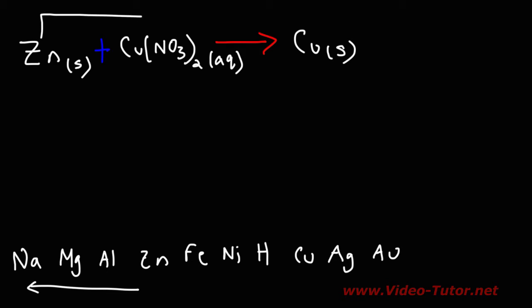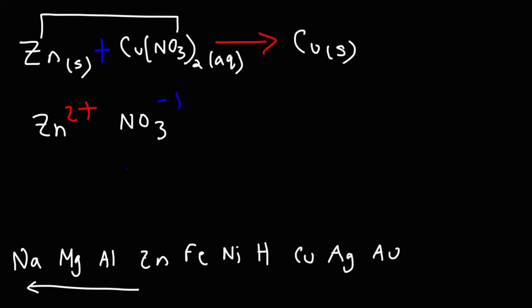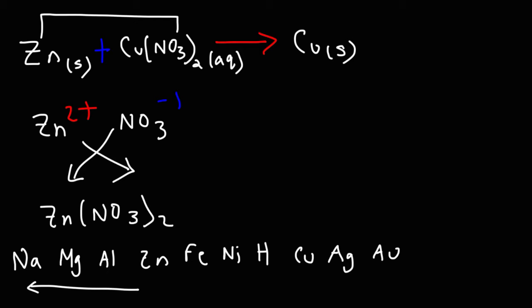The zinc is going to pair up with nitrate. The zinc is going to lose two electrons, turning into the Zn 2+ ion. Nitrate is a polyatomic ion with a minus 1 charge, so in order for these to neutralize each other, we need one zinc ion and two nitrate ions. The chemical formula of zinc nitrate is going to be Zn(NO₃)₂. Nitrates are always soluble in water, so this is going to be in the aqueous phase.